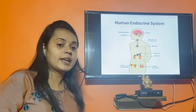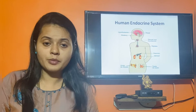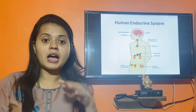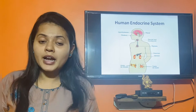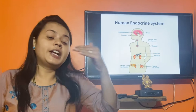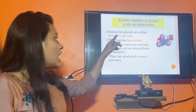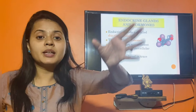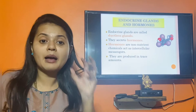Let me quickly revise the chemical coordination and integration chapter. There are basically two types of control systems: neural control, related to the nervous system, and chemical control, related to the endocrine glands. Exocrine glands have ducts through which secretions pass, whereas endocrine glands are ductless — secretions are directly released and travel to target organs via the blood circulation, secreting chemicals known as hormones.